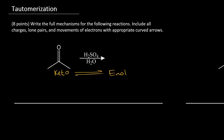Just like with all mechanisms, we start out by drawing the reactant and including all of its lone pairs. I'll draw out acetone and put in two lone pairs on the oxygen. Because the reaction is occurring in aqueous acid, at any given point we have a lot of H3O+ in solution, so we can use that as the acid here.